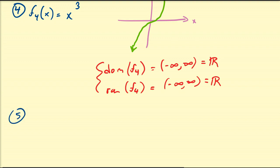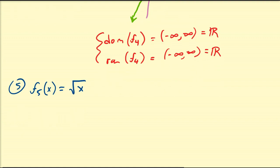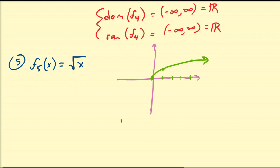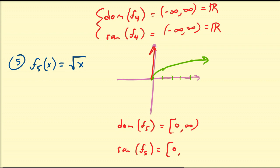Let's look at another class of functions — the radical functions. f₅(x) is equal to the square root of x. Remember, you cannot take square roots of negative numbers and get a real number back — those are called complex numbers. So the square root of 0 is 0, the square root of 1 is 1, and the square root of 4 is 2, giving us this type of curve. The domain of f₅ is all real numbers with x ≥ 0, and the range is also 0 to infinity.